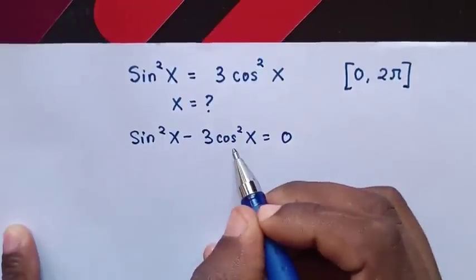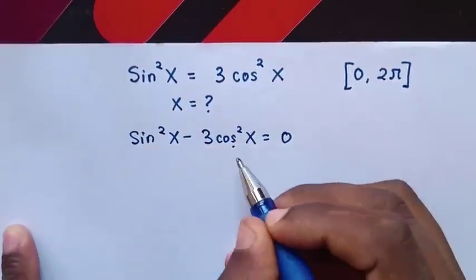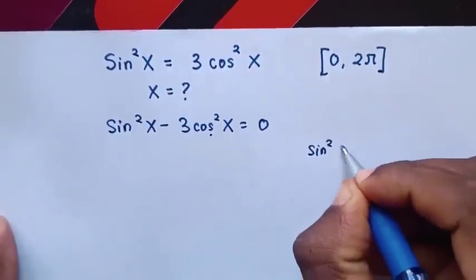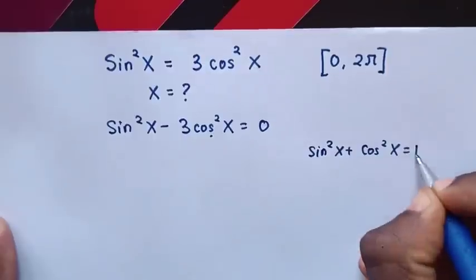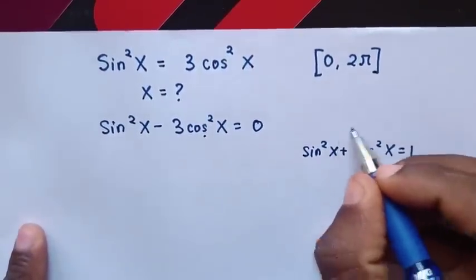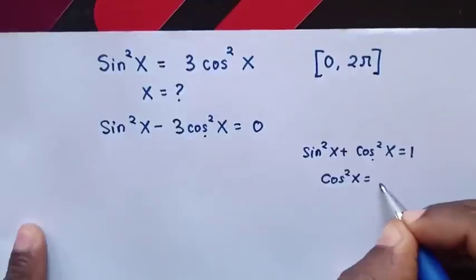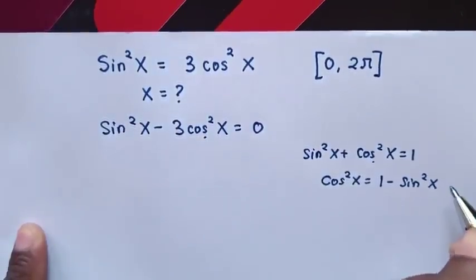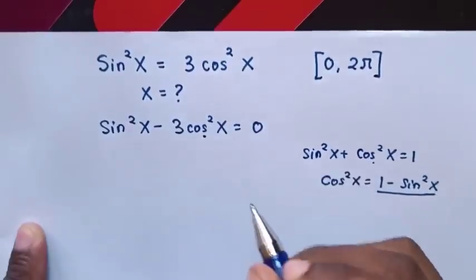From here we have sin squared x and cos squared x. To convert cos squared x into the same form, we apply the rule: sin squared x plus cos squared x equals 1. Rearranging gives cos squared x equals 1 minus sin squared x. We will substitute this into our equation.